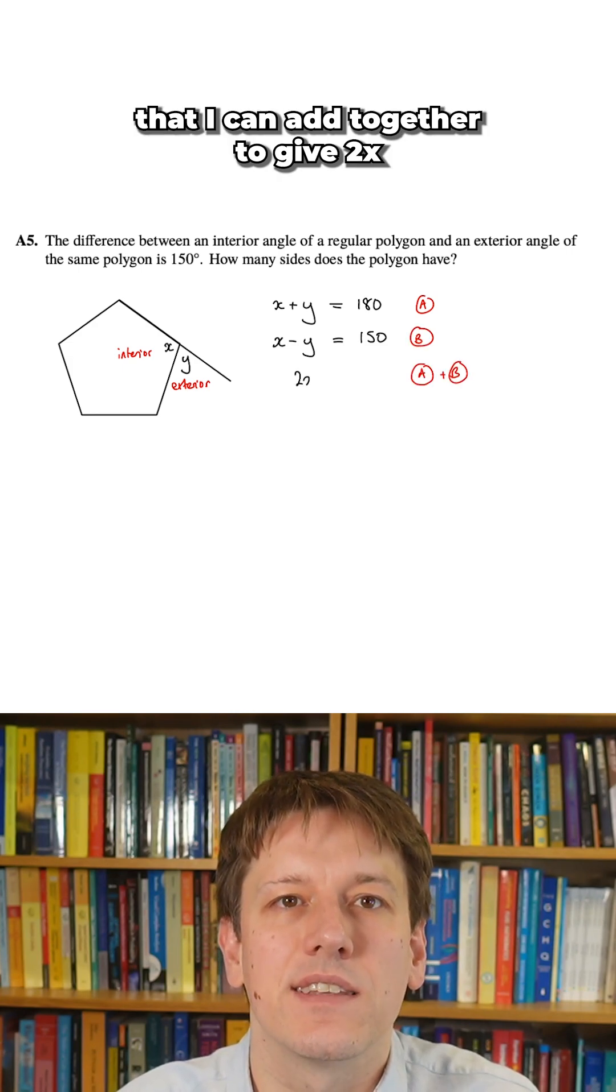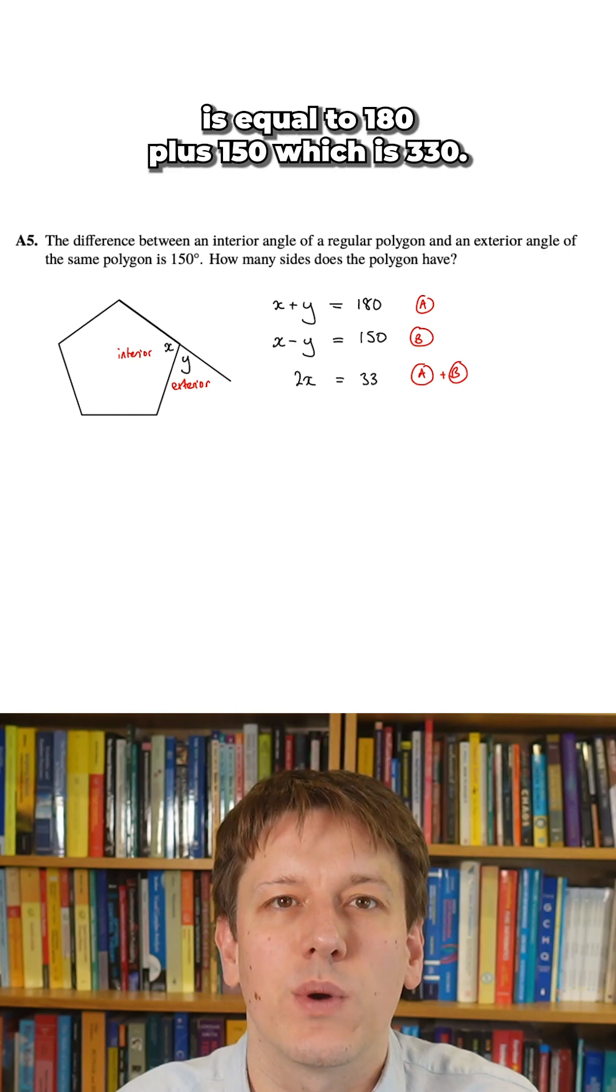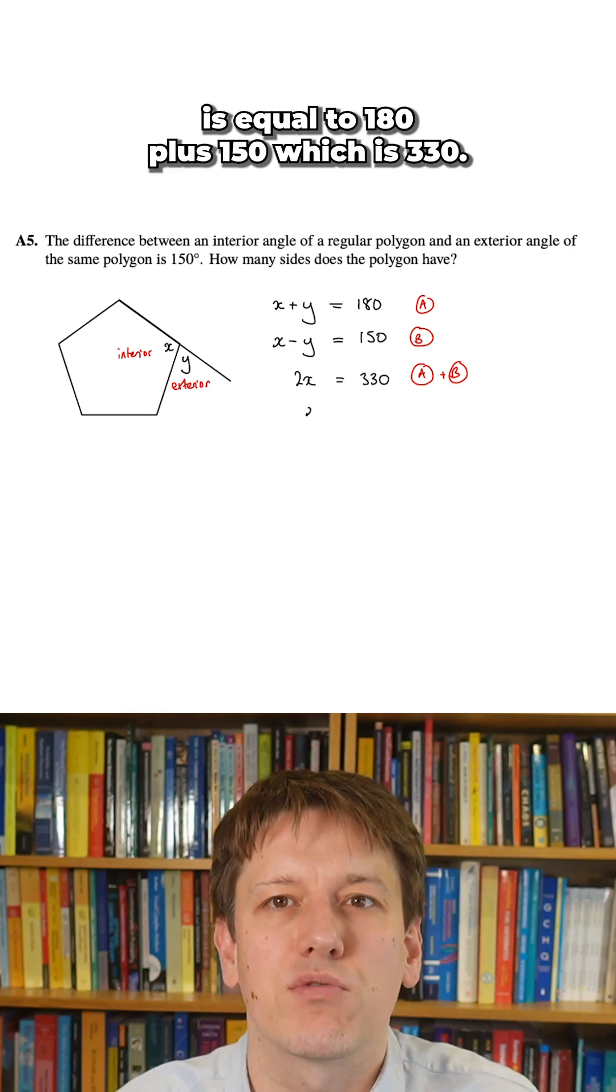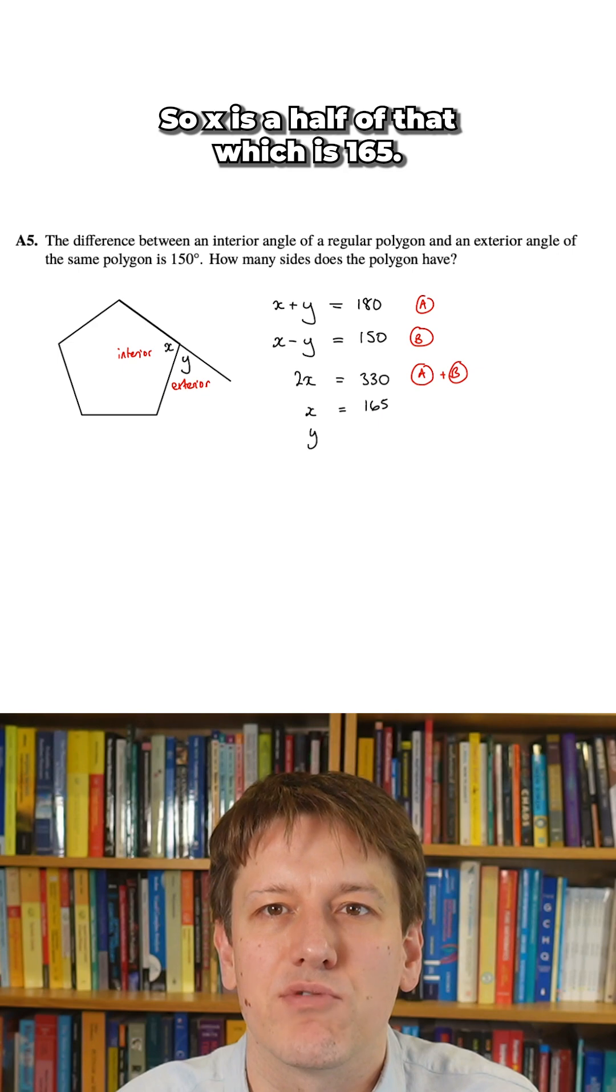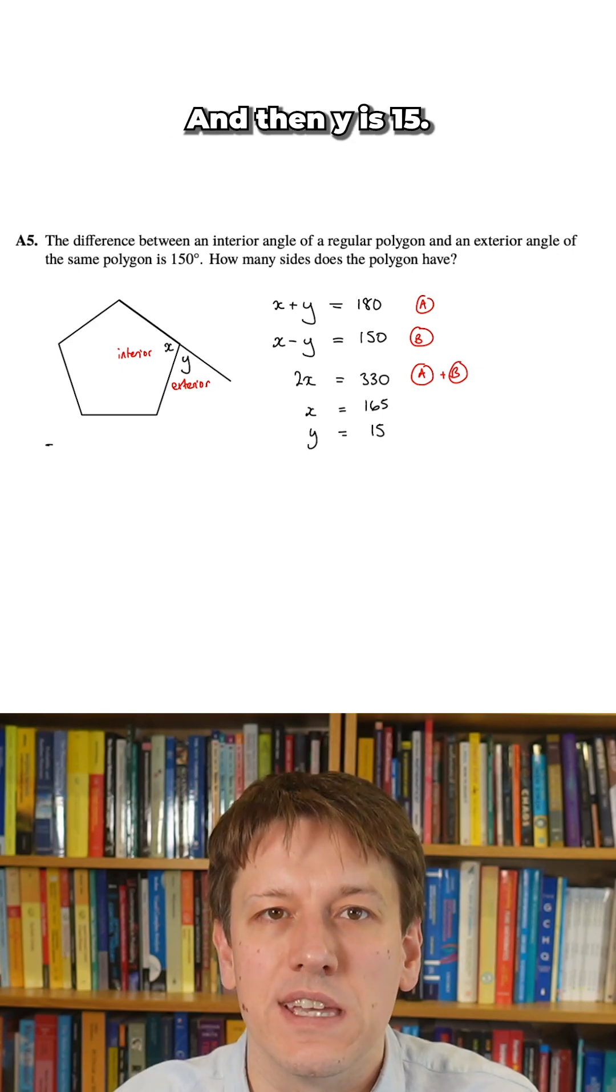that I can add together to give 2x is equal to 180 plus 150, which is 330. So x is a half of that, which is 165, and then y is 15.